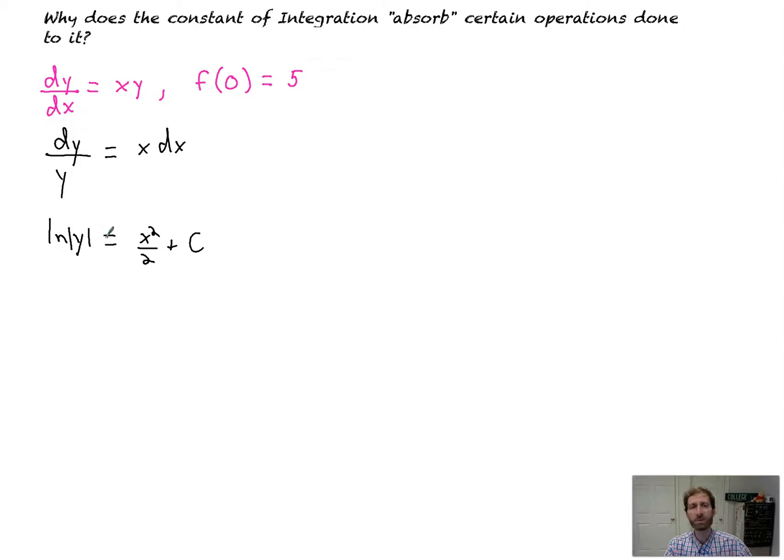Here's why it gets absorbed. The next step is we're going to exponentiate both sides. So now I'm going to not absorb, I'm going to just keep it all together. That would give me the absolute value of y equals e to the x squared over 2 times e to the c. Because they're both exponents and they're being added, you'd have times e to the c.